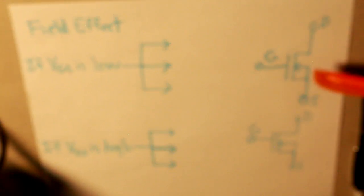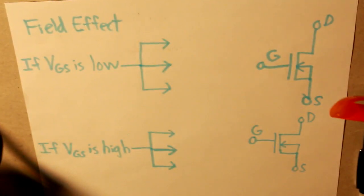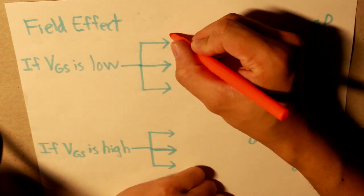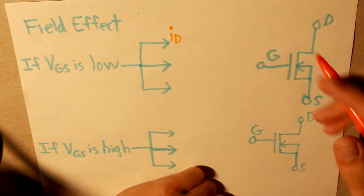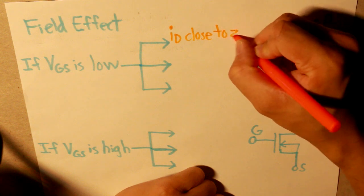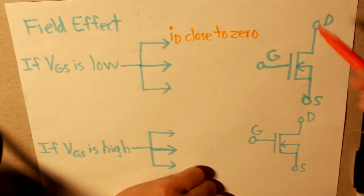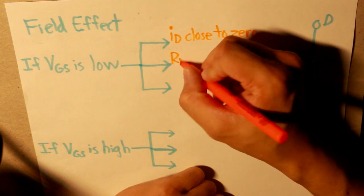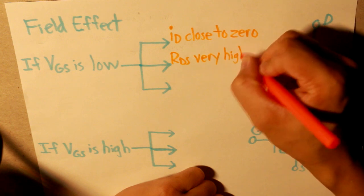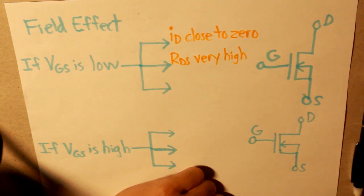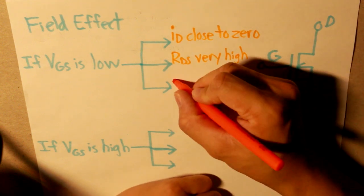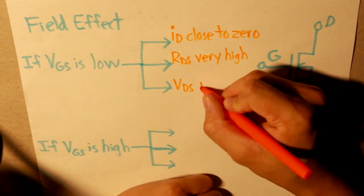So, let's apply the situation and conditions. If the voltage VGS is low, then our drain current is next to zero, close to zero. Our resistance, RDS, is very high. High to the point where it almost acts as an open circuit. And also, VDS is low as well.